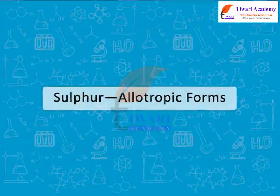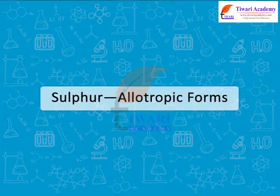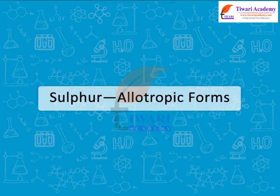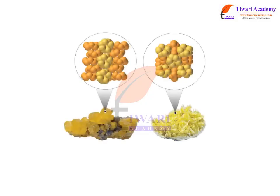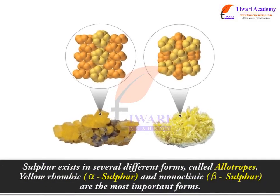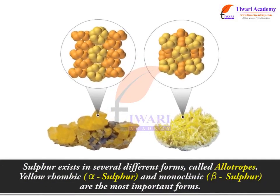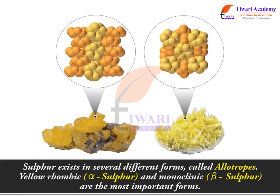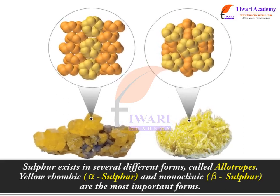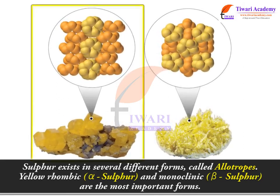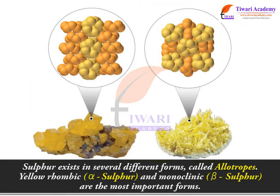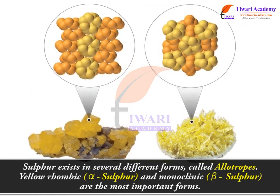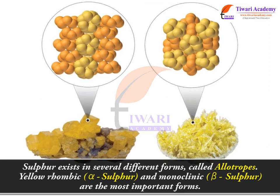Sulphur: Allotropic Forms. Sulphur exists in several different forms called allotropes. Yellow rhombic and monoclinic are the most important forms.